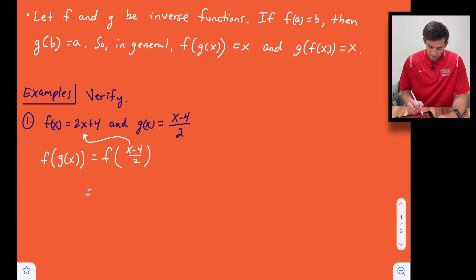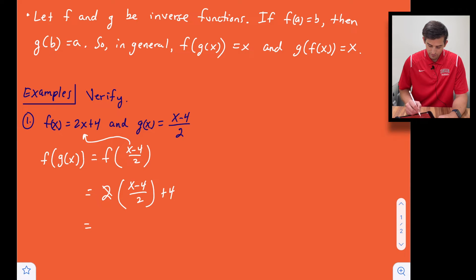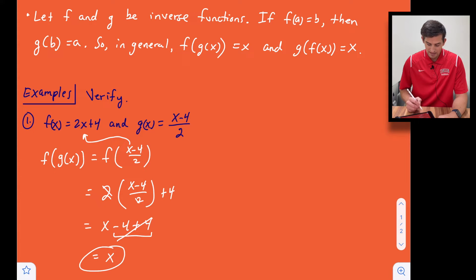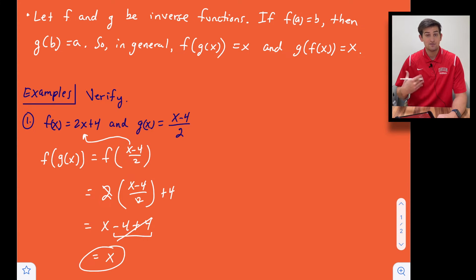So we get 2 times (x − 4) / 2, plus 4. Now here the 2 in the numerator and the 2 in the denominator cancel, leaving us with x − 4 + 4. Then −4 + 4 cancels out, and we're left with just x. That's what we're trying to see when we evaluate these — that when we simplify everything down, we're left with just x.